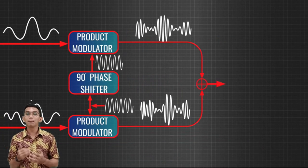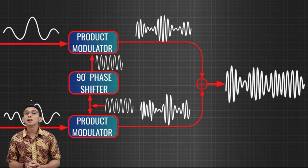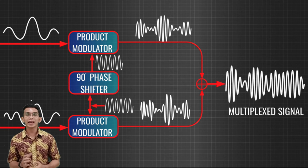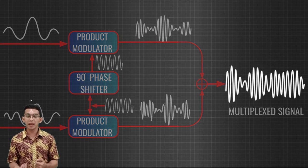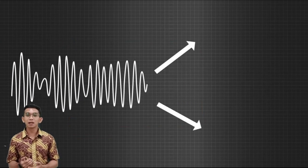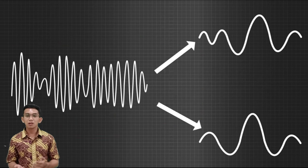Now these two modulated signals are mixed together and form a single signal we call a multiplex signal. The interesting thing is that on the receiver side, we can easily separate out the original signals from the multiplex signal.